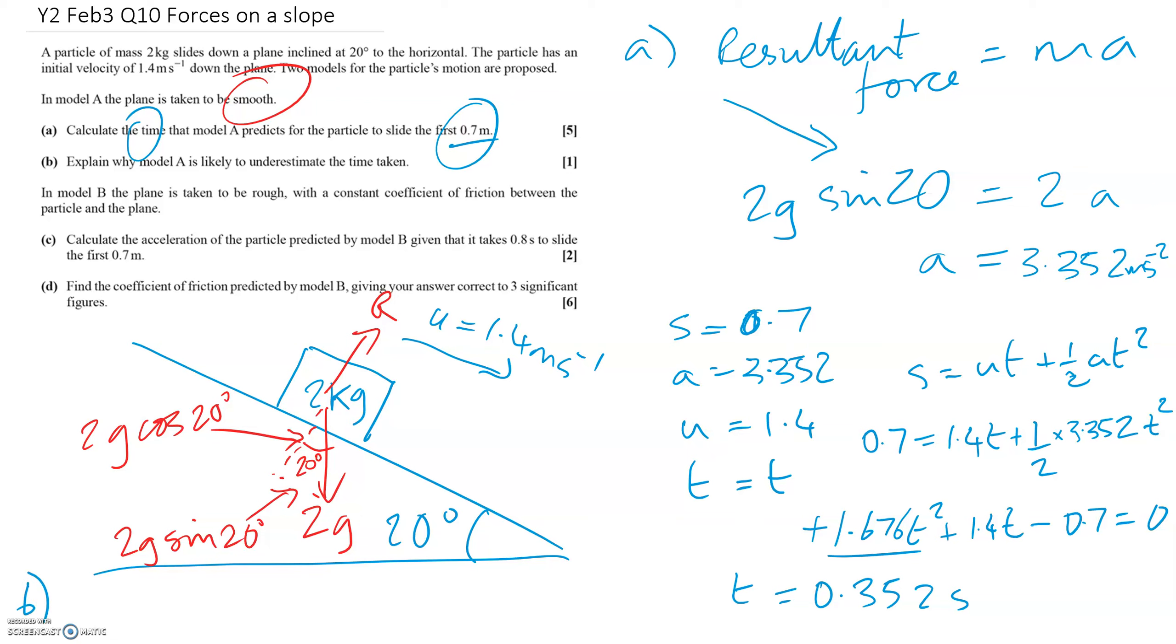In part B, the question is saying, why is this likely to be an underestimate for the time? Well, because this model doesn't include friction or any air resistance or any resistive forces. So since there is no friction, friction would slow down the particle so it would take longer in practice to slide down the slope 0.7 meters.